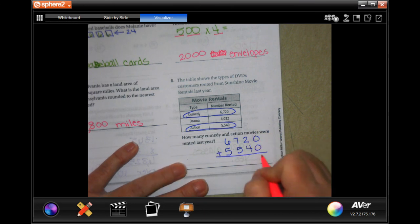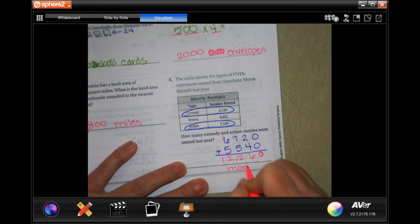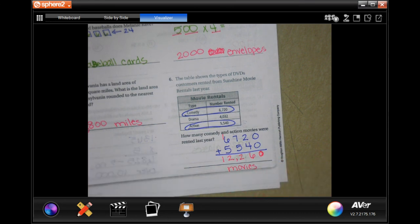Zero, zero. Two plus four is six. Seven plus five is 12, carry our one. One plus six is seven, plus five is 12. 122,600 movies.